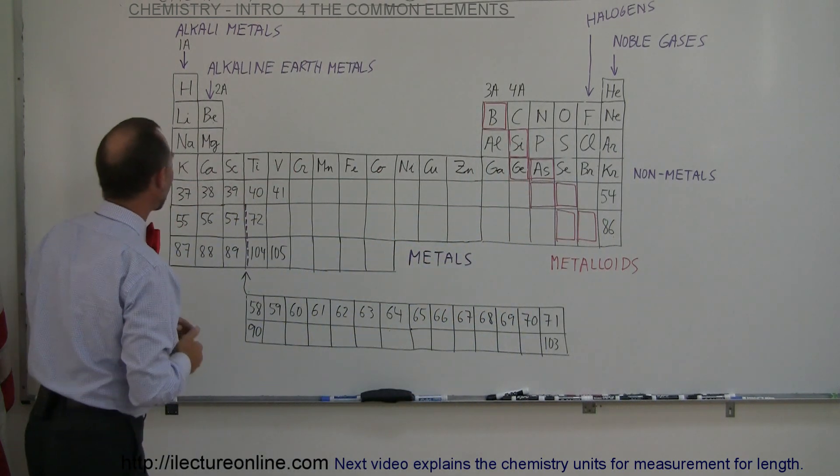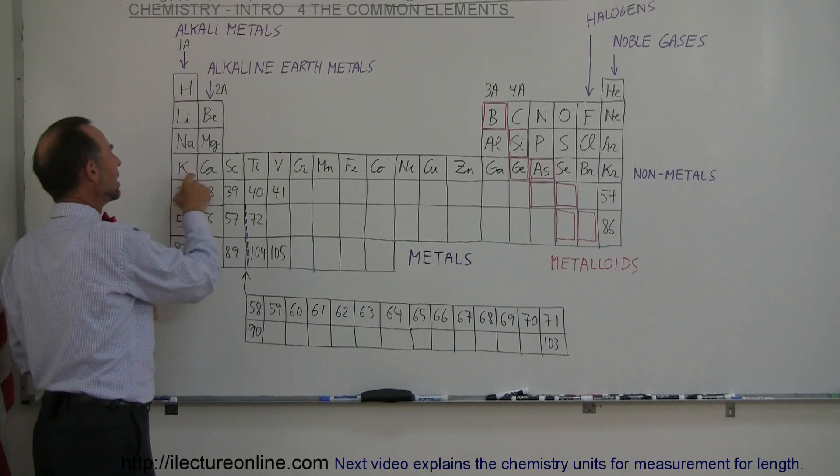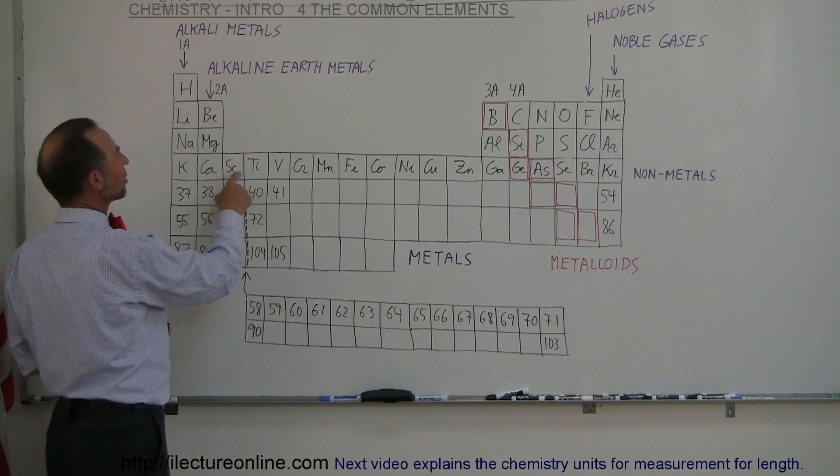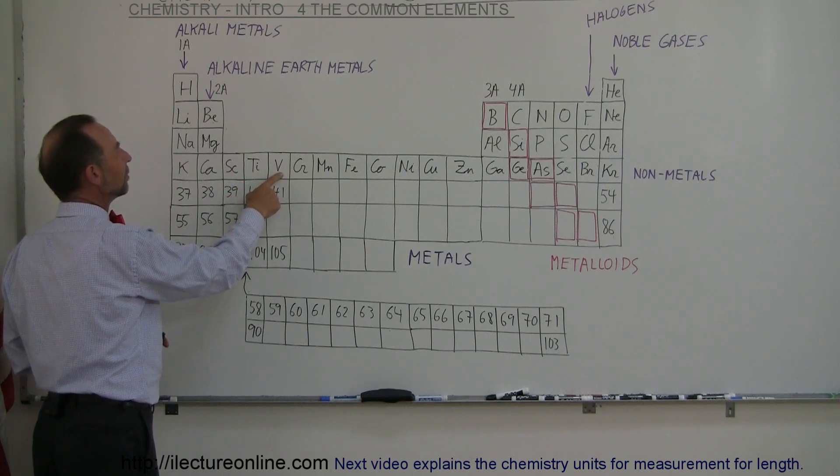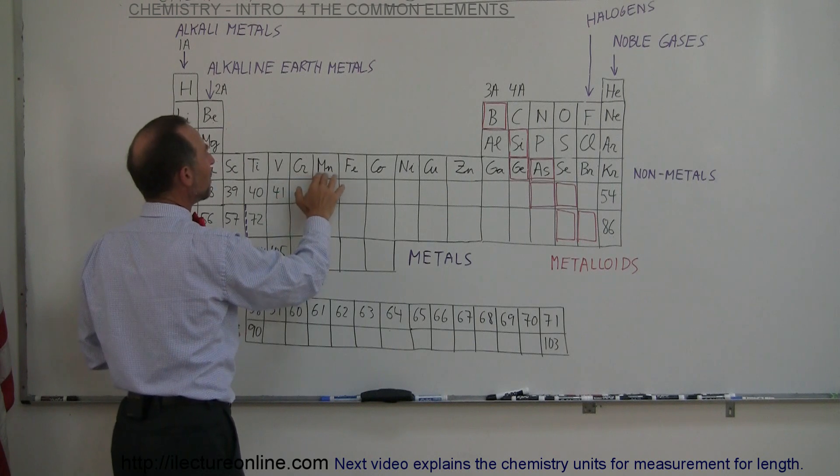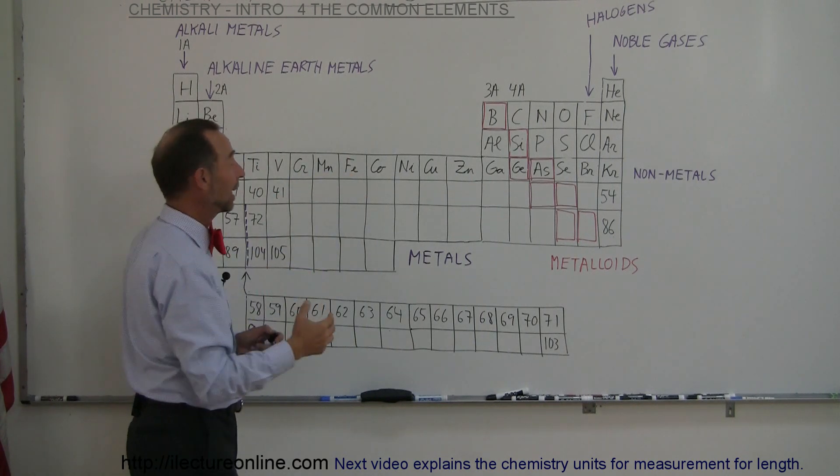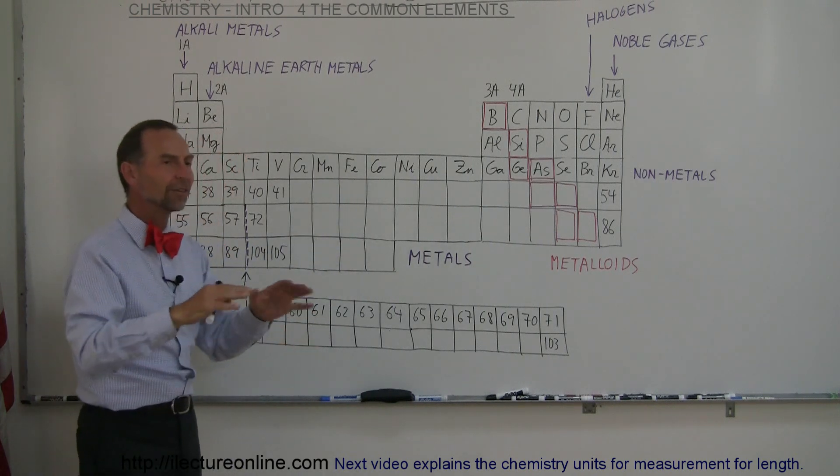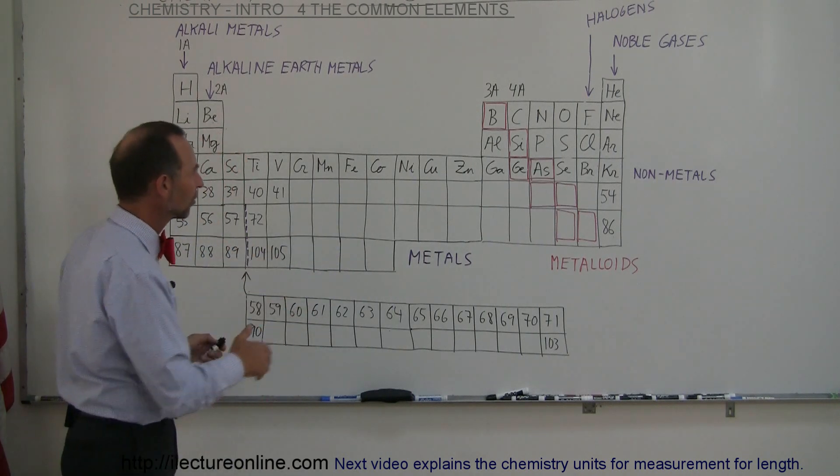Here we have potassium. It's another salt that our body needs. We have calcium. Calcium, of course, we need for our bones. We have scandium, titanium, vanadium, chromium. So now we're getting into more of the common metals. Manganese, iron. Of course, iron is the most abundant metal in the universe. Much of what we find at the center of the earth and in our earth's crust is iron.